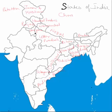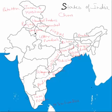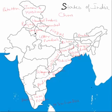To the south of Andhra Pradesh is a triangular-shaped state very close to Sri Lanka — that is Tamil Nadu. To the west of Tamil Nadu, covering the entire western border and being one of the southernmost states, is Kerala. The remaining south Indian state that borders Kerala and Tamil Nadu on the southern side and Andhra Pradesh and Telangana on the eastern side is Karnataka.